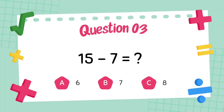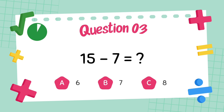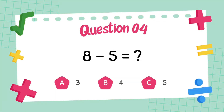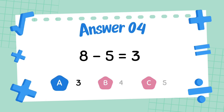What is 15 minus 7? The answer is 8. What is 8 minus 5? The answer is 3.